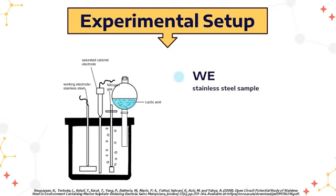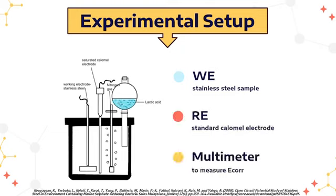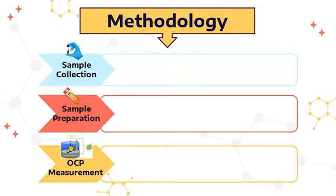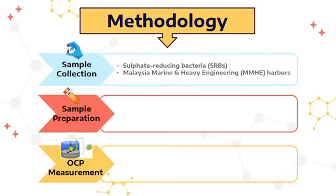In this study, the working electrode used was a stainless steel sample, the reference electrode was a standard Calomel electrode, and the corrosion potential was measured. To conduct the experiment, the samples were collected and then kept in the lab using the VMNI medium.